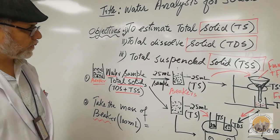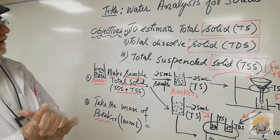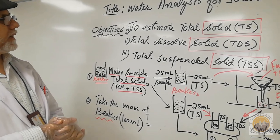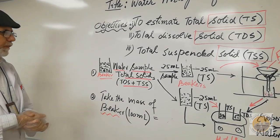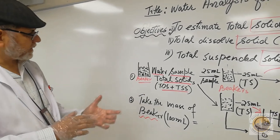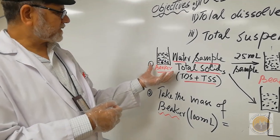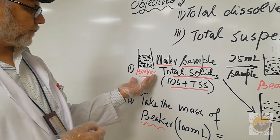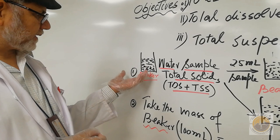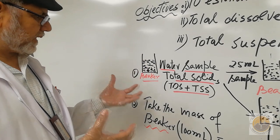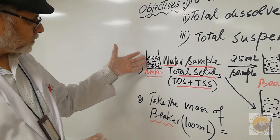We have three types of solids to find: TS, TDS, and TSS. I will demonstrate how to determine them. The water sample contains all three, and importantly, TS equals TDS plus TSS.